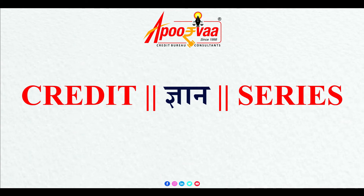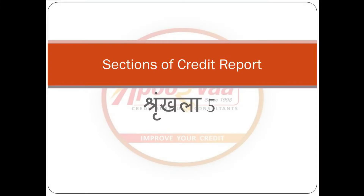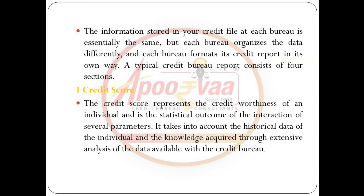Welcome to the Credit Gyan series. Today we are going to talk on sections of a credit report. The information stored in your credit file at each bureau is essentially the same, but each bureau organizes the data differently and formats its credit report in its own way. A typical credit bureau report consists of four sections.